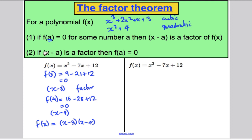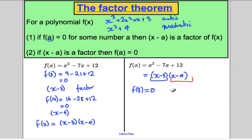Now going the other way: here is a polynomial which from GCSE knowledge I know factorizes to x minus 3 times x minus 4. Because I know x minus 3 is a factor, I know that f of 3 must be zero — I don't even have to work it out. Similarly, because x minus 4 is a factor, I know that f of 4 gives me zero. Using the factor theorem both ways around is going to help us answer questions later in the complex number chapter.